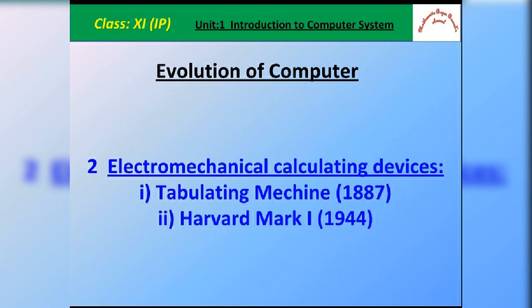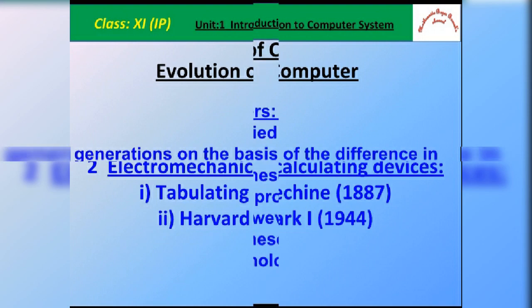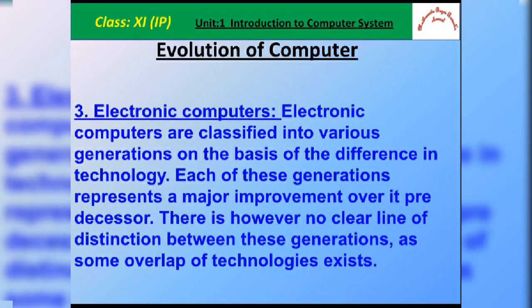After this, the electronic computers were introduced. Electronic computers are classified into various generations on the basis of differences in technology — first generation, second generation, third generation, and fourth generation computers. Each of these generations represents a major improvement over its predecessor, based on the technology being used. These generations are very important from an exam point of view, so remember them.